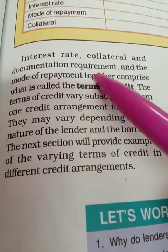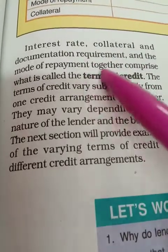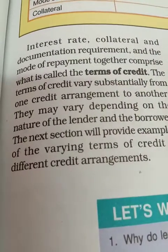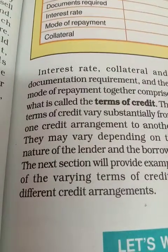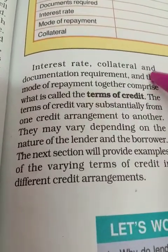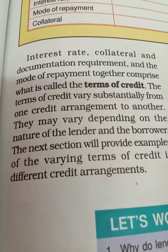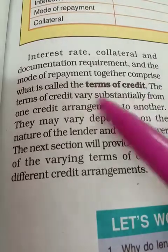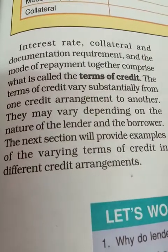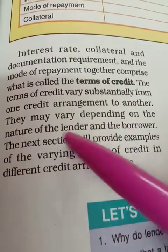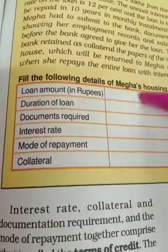Now on page 45: interest rate, collateral, documentation requirements, and mode of repayment together comprise what is called the terms of credit. This is a very important question — what do you mean by terms of credit? Terms of credit means the conditions fixed between borrower and lender. Interest rate is the interest on the loan; collateral security is the asset kept with the bank; documentation is the paperwork like the loan agreement; and mode of payment is how you will repay the loan. The terms of credit vary substantially from one credit arrangement to another depending on the nature of the lender and the borrower.